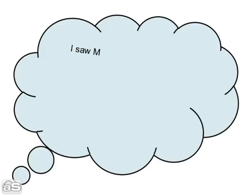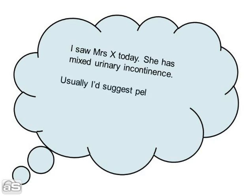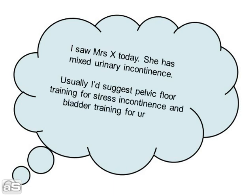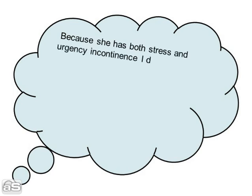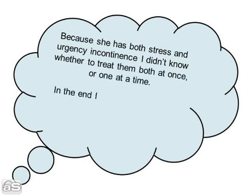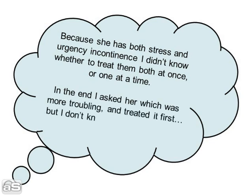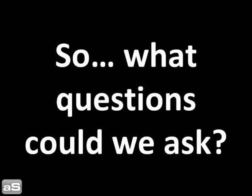Let's use an example. I saw Mrs. X today. She has mixed urinary incontinence. Usually I'd suggest pelvic floor training for stress incontinence, and bladder training for urgency incontinence. Because she has both stress and urgency incontinence, I didn't know whether to treat them both at once or at the same time. In the end, I asked her which was more troubling and treated it first. But I don't know if that was the best thing to do.